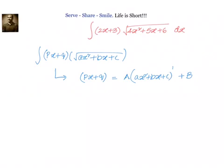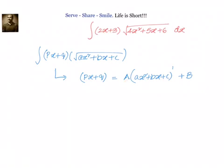One part will have the derivative of (4x² + 5x + 6), and the other one will come into standard form which can be converted into either square root of (x² − a²) or (x² + a²). So, let us go ahead and first try to find out the values of a and b.